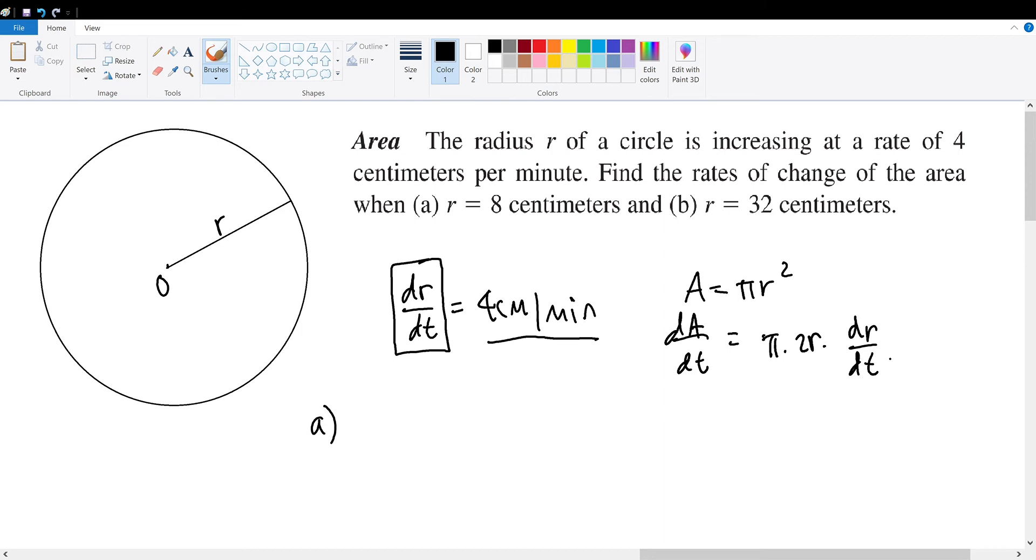And the reason why we do this is because both the area and the radius of the circle are variables that are changing when time is changing. Therefore, when we take the differentiation on both sides, we're taking the differentiation in respect to time because we want to find how the area and radius are changing when time is changing. Hence, we take the derivative on both sides in respect to time.